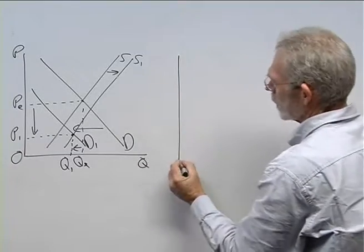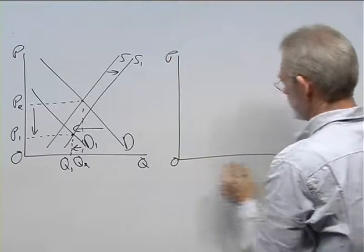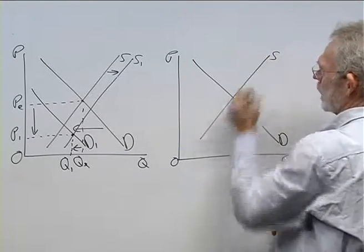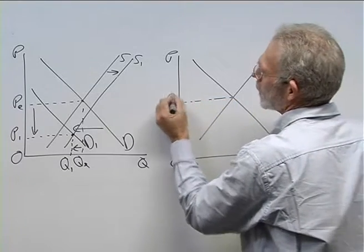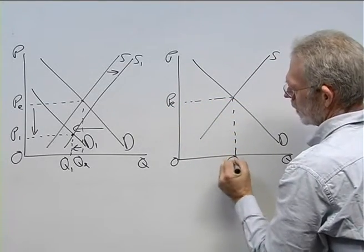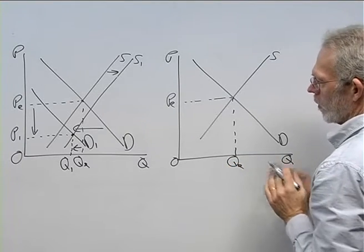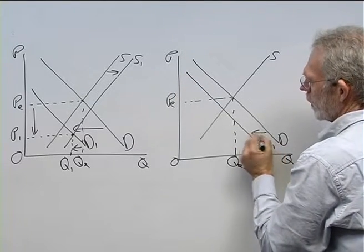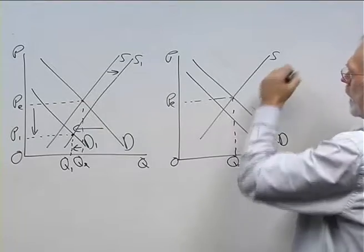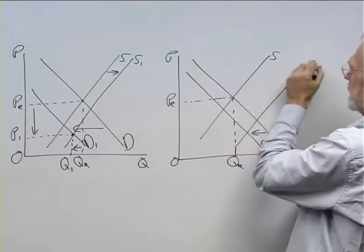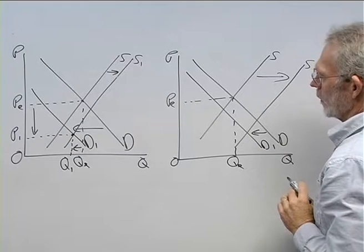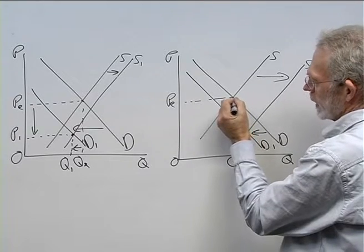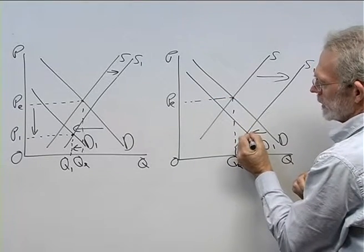Again, we start off with a diagram of the market — demand and supply. We have equilibrium price and equilibrium quantity. A decrease in demand, shown by a leftward shift of the demand curve, accompanied by an increase in supply, a rightward shift of the supply curve. In this instance, we move from this equilibrium position to this equilibrium position.